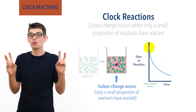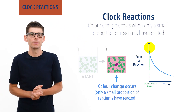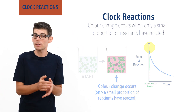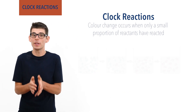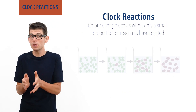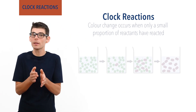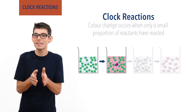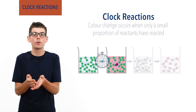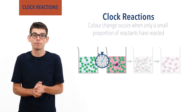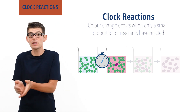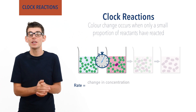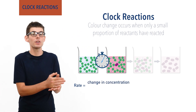This is the trick to a clock reaction, and depending on the type of reaction being studied, a second reaction is usually used to help control when the colour change occurs, enabling us to easily time how long it takes to form a specific amount of product. From this we can calculate the rate of the reaction: change in concentration divided by change in time.